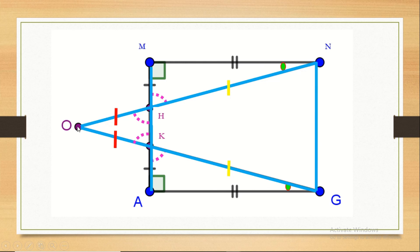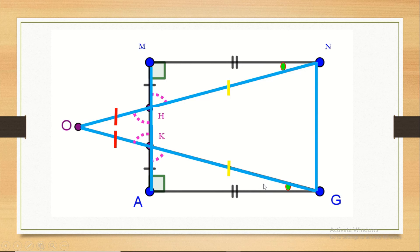Now, what is the nature of triangle ONG? We concluded that OH equals OK. We also know that HN equals KG as homologous sides. Since ON equals OH plus HN and OG equals OK plus KG, and each of the corresponding parts are equal, therefore sides ON and OG are equal to each other. So triangle ONG is isosceles at O. Thank you for watching — if you enjoyed this video, please like, share and subscribe.